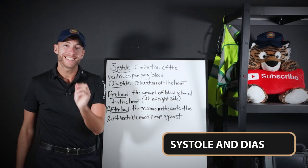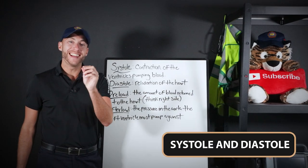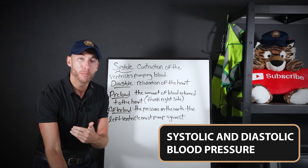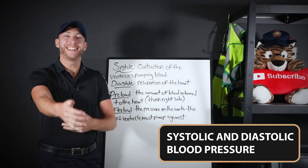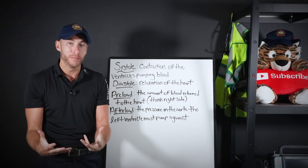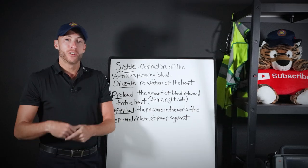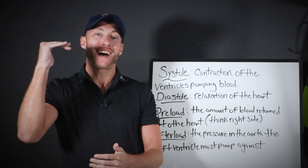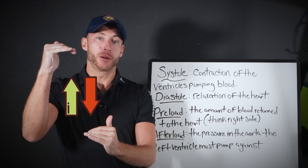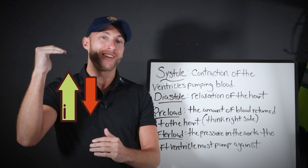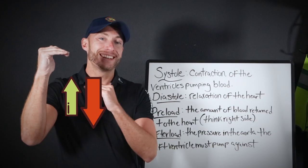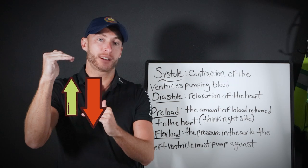You're going to hear about systole and diastole — systolic blood pressure and diastolic blood pressure. With a blood pressure, we have a top number and a bottom number. The top number is our systolic; the bottom number is the diastolic.